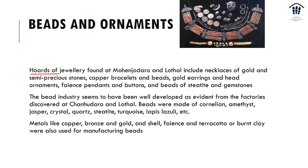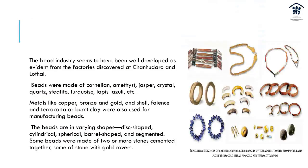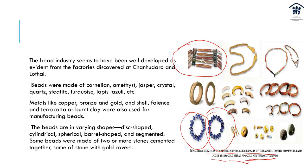What about beads and ornaments? Hordes of jewellery have been found in Mohenjo-Daro and Lothal, including necklaces of gold and semi-precious stones, copper bracelets, beads, gold earrings, head ornaments, faience pendants, buttons, and beads of steatite and gemstones. The bead industry has been discovered at Chanudaro and Lothal. The beads were made of cornelian, amethyst, jasper, crystal, quartz, steatite, turquoise, and lapis lazuli. Metals like copper, bronze, and gold, as well as shell, faience, and terracotta were used in manufacturing beads. Looking at the different types: necklaces of cornelian beads, gold bangles, terracotta beads, carnelian beads, and lapis lazuli. The bead industry seems well developed.